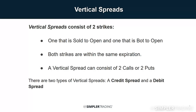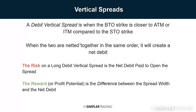The first thing to know about vertical spreads is they consist of two strikes - one that is sold to open and one that is bought to open. Both strikes will be within the same expiration, and a vertical spread can consist of either two calls or two puts. There are two types of vertical spreads: a credit spread and a debit spread.